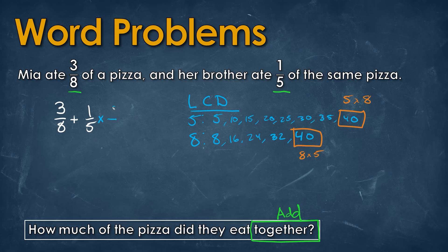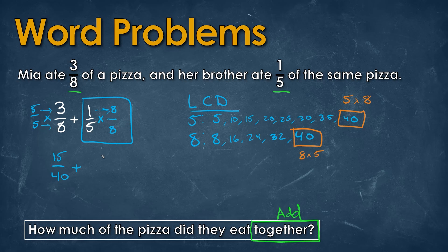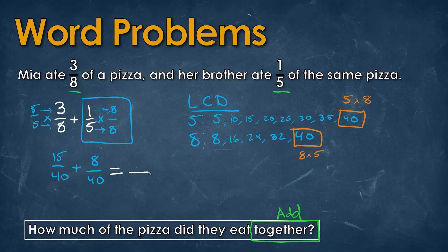We multiply 1 over 5 by 8 on top and bottom, and we multiply 3 over 8 by 5 on top and bottom. Multiplying straight across: 5 times 3 gives us 15, and 5 times 8 gives us 40. Then for the other fraction: 1 times 8 gives us 8, and 5 times 8 gives us 40. Now the denominators are the same — both 40. When adding fractions we keep the same denominator of 40 and just add the numerators: 15 plus 8 is 23.